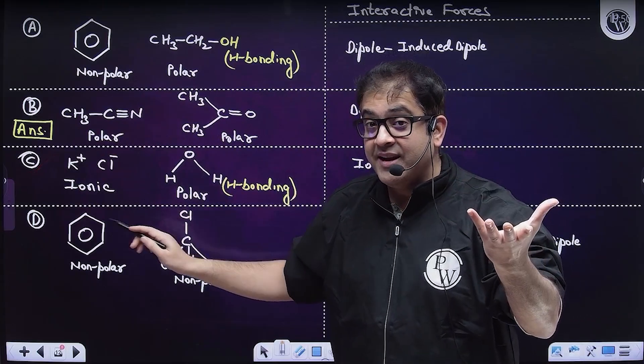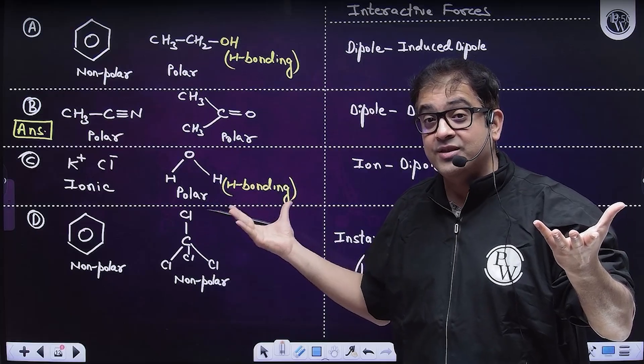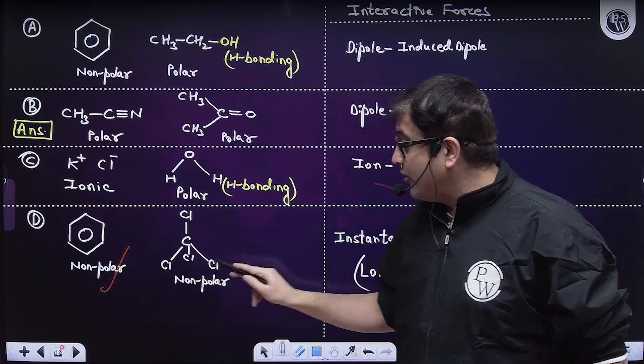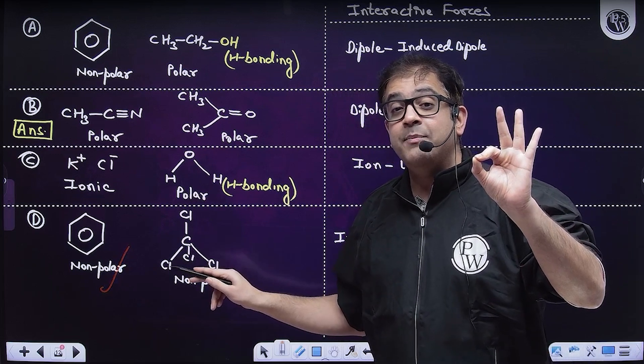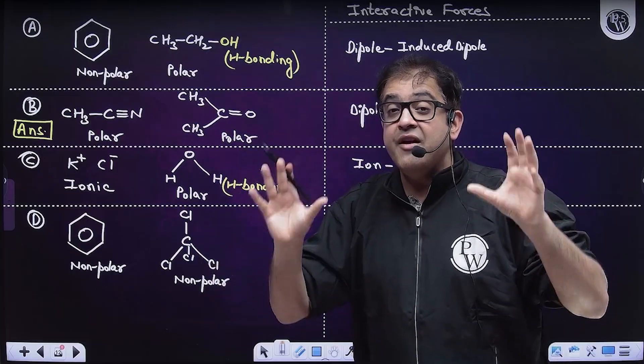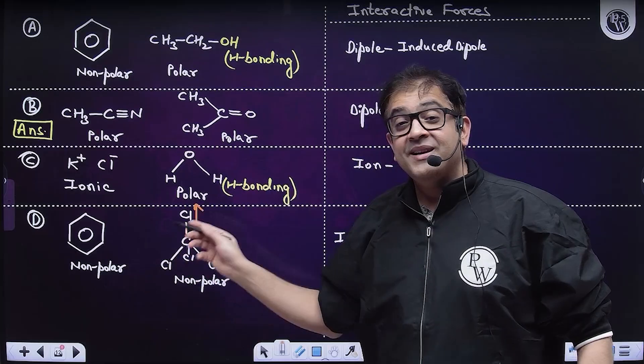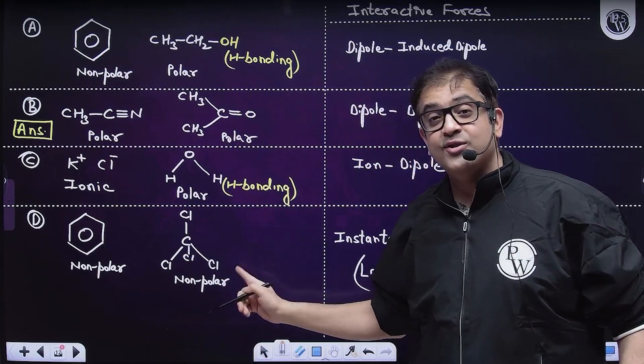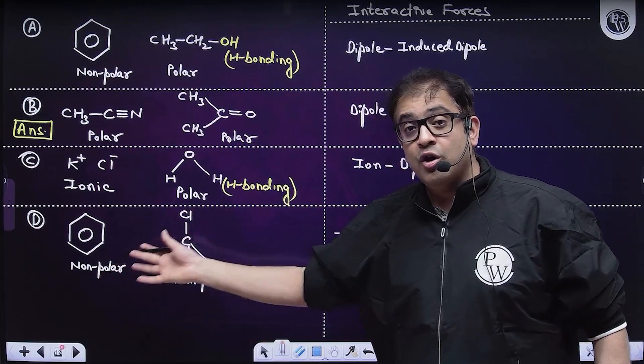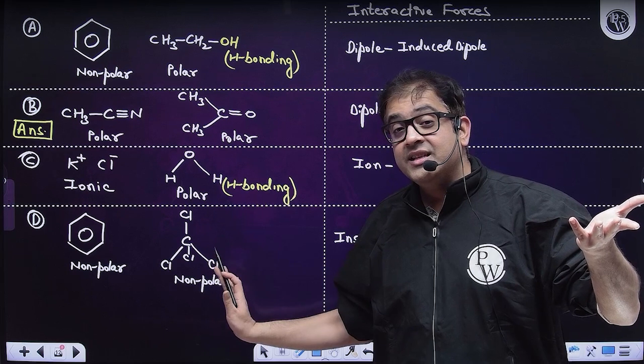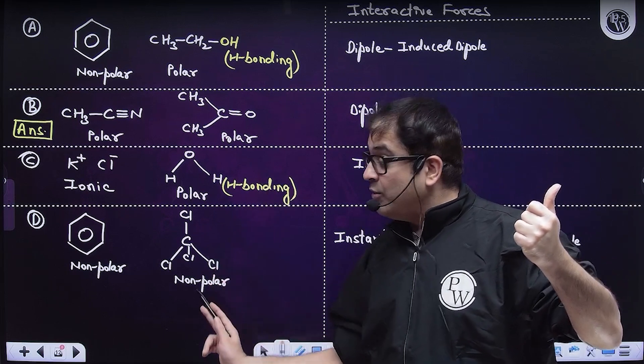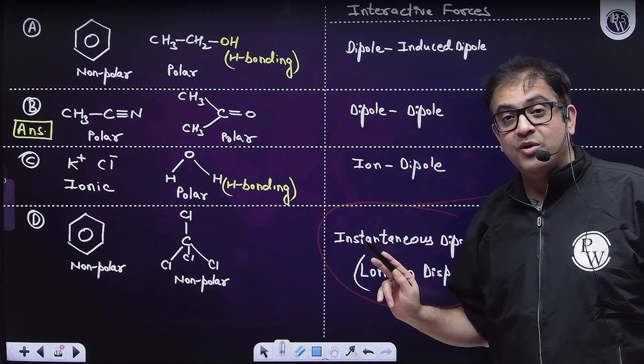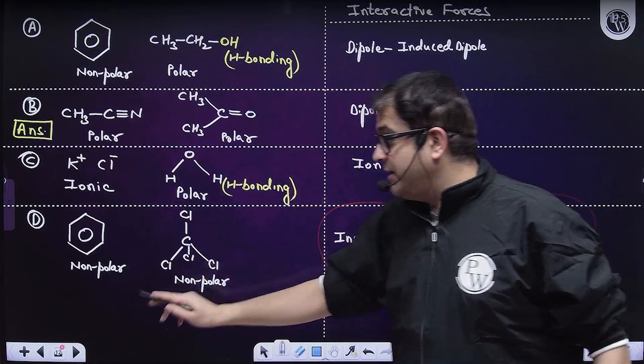Option B is our answer. CH3CN is a polar molecule. Acetone is another polar molecule with a permanent dipole. Interaction will be termed as dipole-dipole interaction. In option C, KCl is an ionic compound that will furnish K+ and Cl- ions. Water is a polar molecule with hydrogen bonding capacity, so they will have ion-dipole interaction. Benzene and CCl4 are both non-polar molecules, so interactions are instantaneous dipole-induced dipole interaction, commonly known as London dispersion forces.